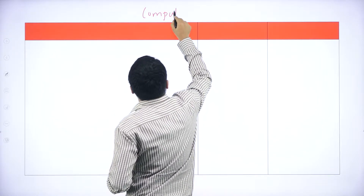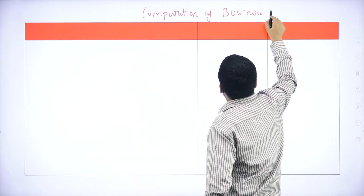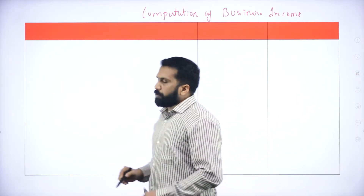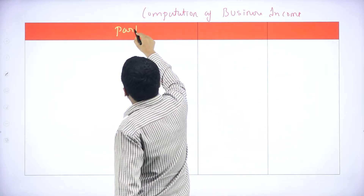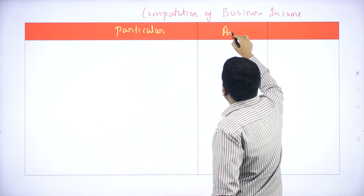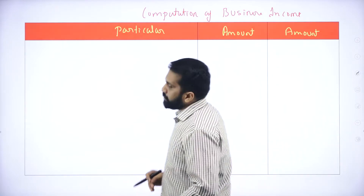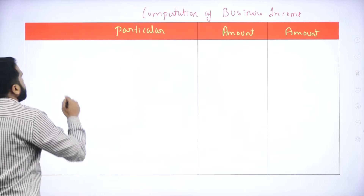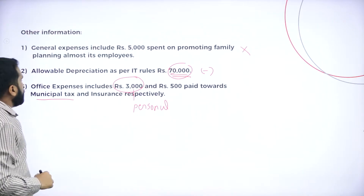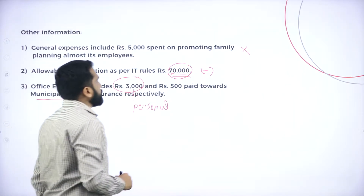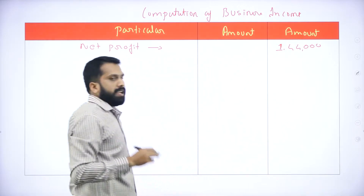Now we go to the answer. Computation of Business Income. We set up a table with a Particulars column and two Amount columns. Net profit is 1,44,000. Then we add inadmissible expenses.